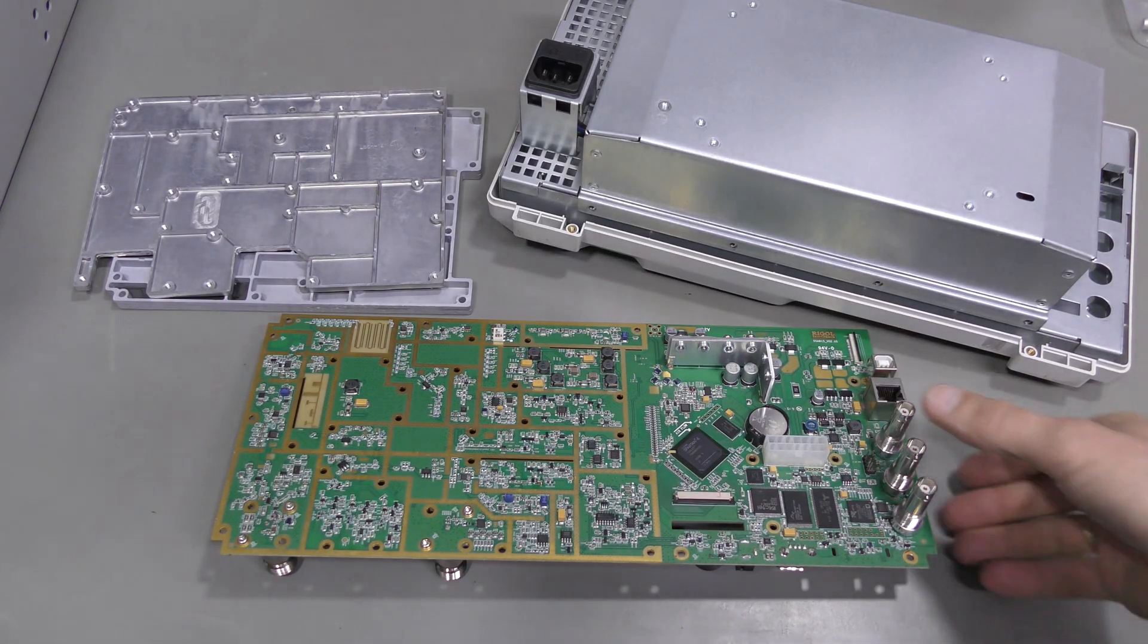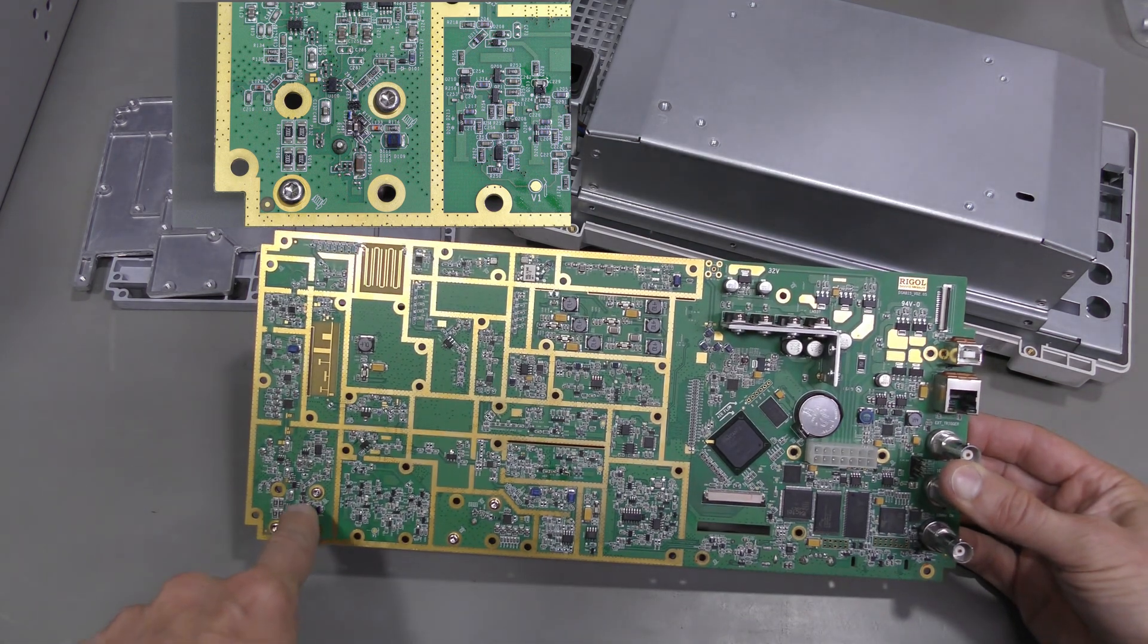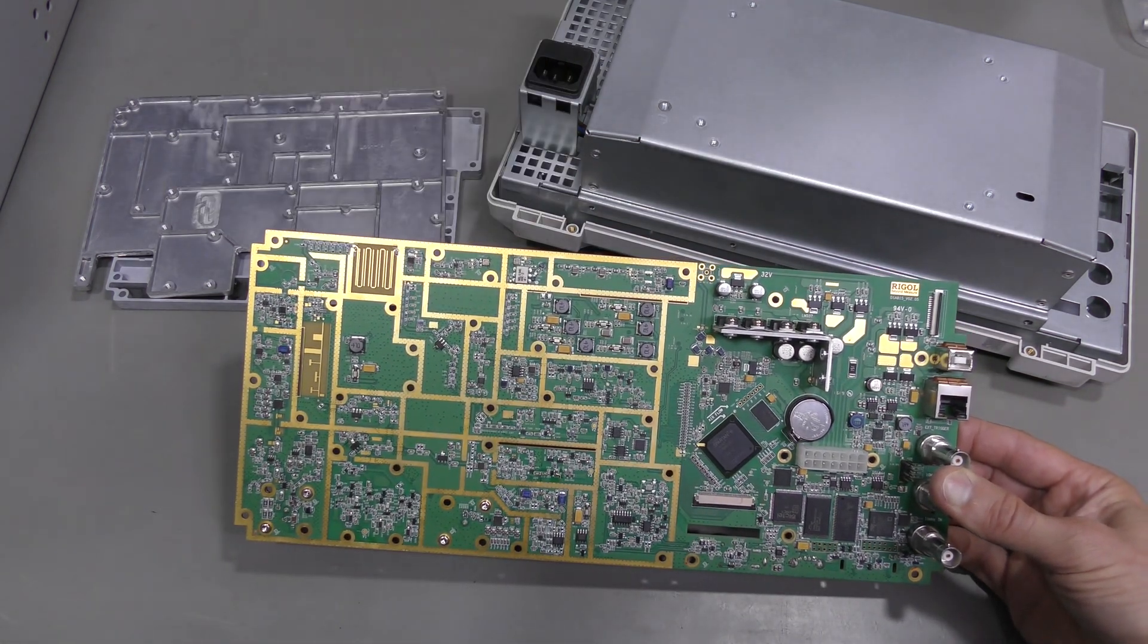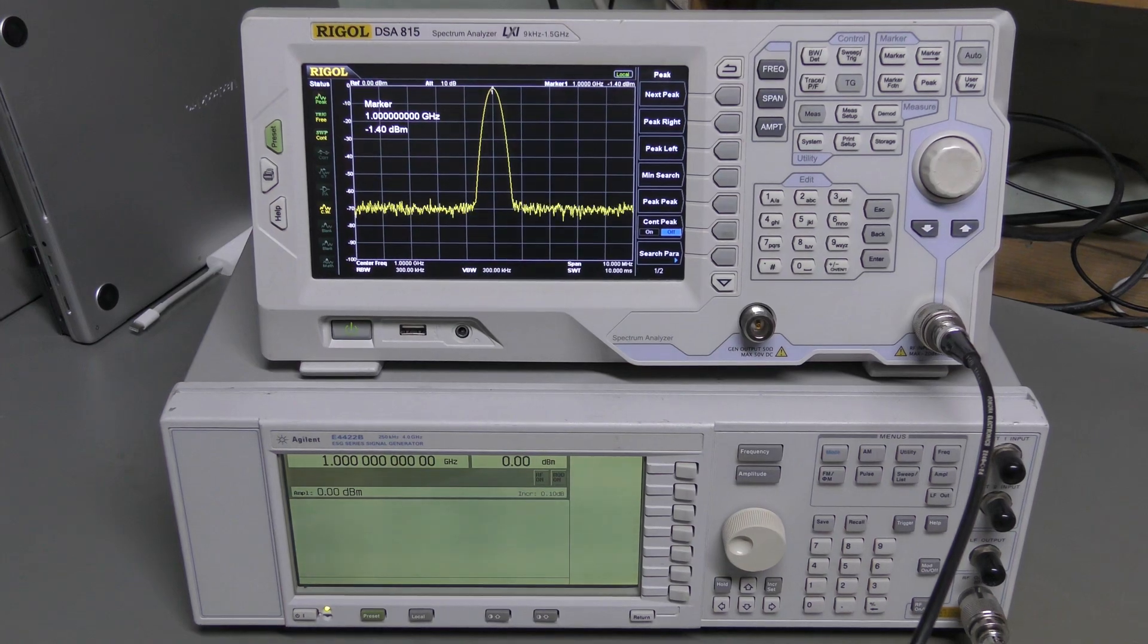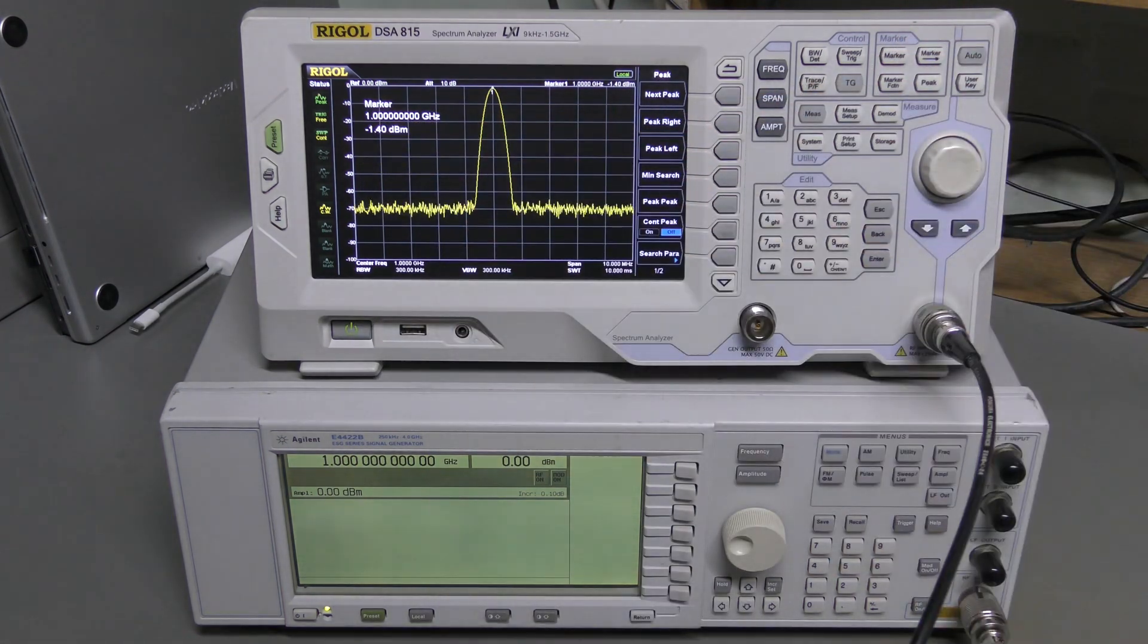I took the analyzer apart. Here is the repaired front end. Let's remove the protection diodes and measure without them. Here we are, measuring without protection diodes. We read about minus 1.4 dBm, which is about 1.1 dB higher.